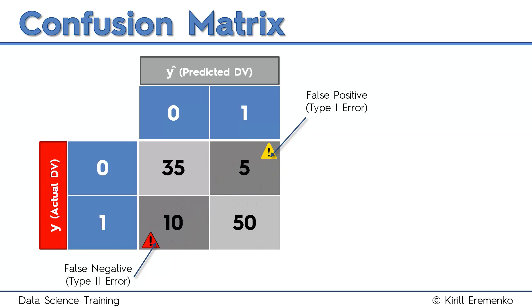The more you have in the first diagonal, the better. The more you have in the second diagonal, the worse your model is performing.